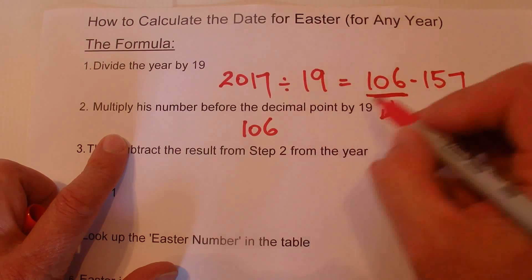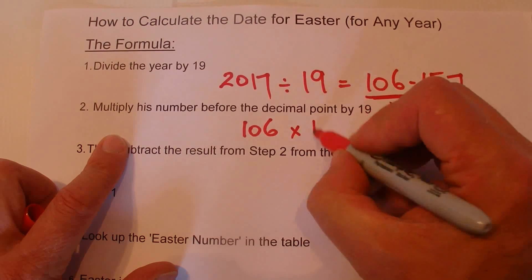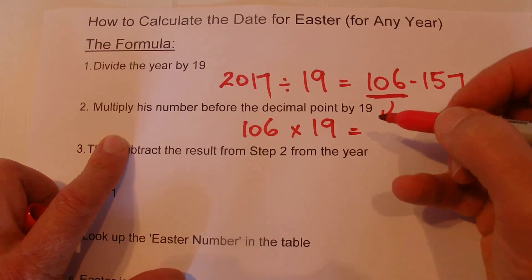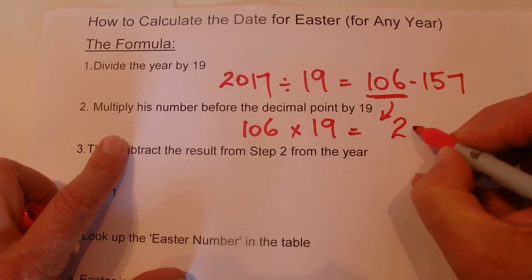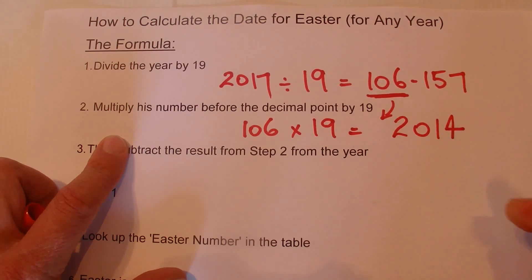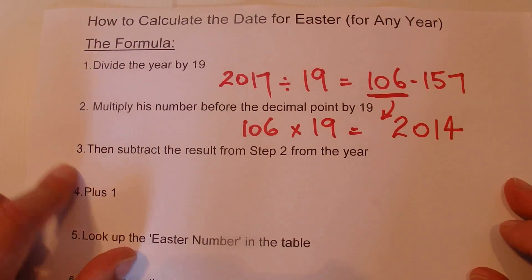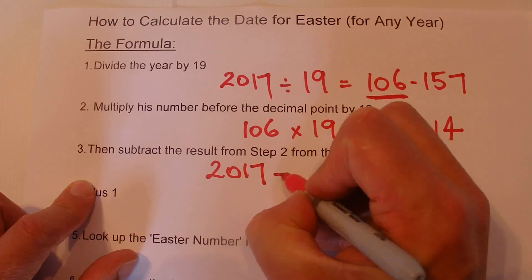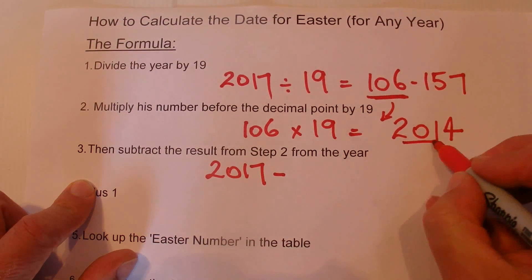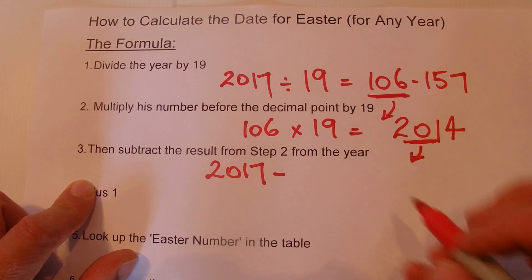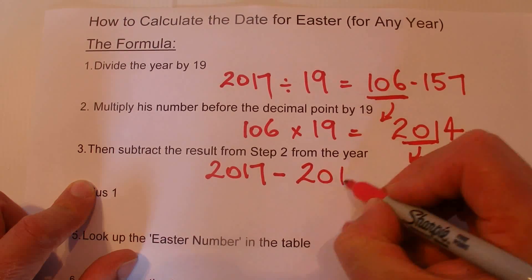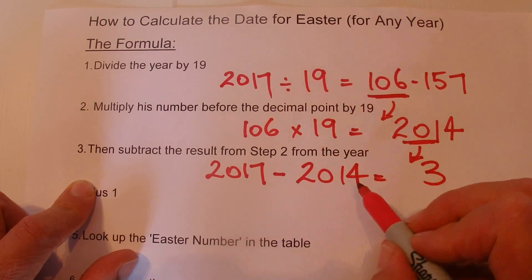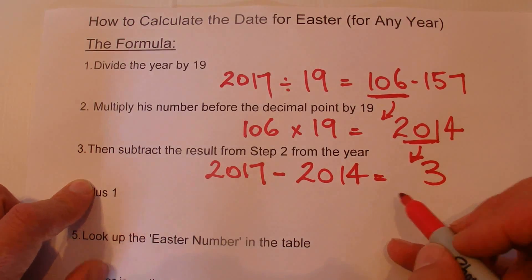The next step is to multiply that 106 by 19, and that gives us 2014. So what we do is we get the year again — 2017 — and we subtract the 2014 we found in step 2 from the year. It's a pretty easy calculation: 2017 minus 2014 is 3.